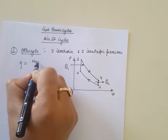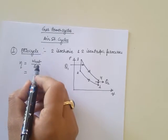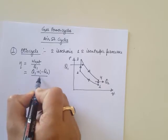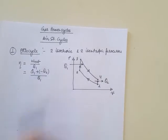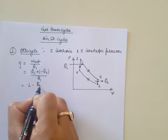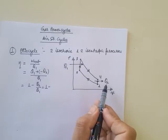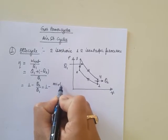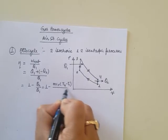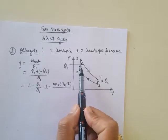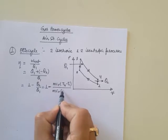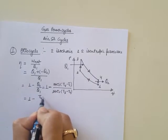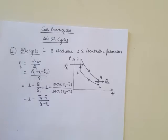Efficiency is defined as net work output divided by heat input. Net work with respect to a cycle is the same as net heat transfer, so it will be (Q1 - Q2) / Q1. This gives us 1 - Q2/Q1. The magnitude of Q2 is isochoric heat rejection: m·Cv·(T4 - T1). The magnitude of Q1 is isochoric heat addition: m·Cv·(T3 - T2). The Cv cancels out, giving 1 - (T4 - T1)/(T3 - T2).